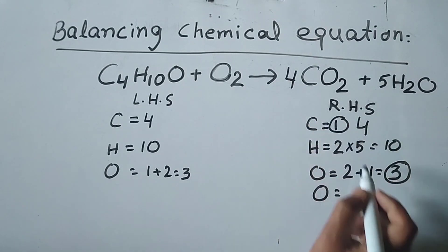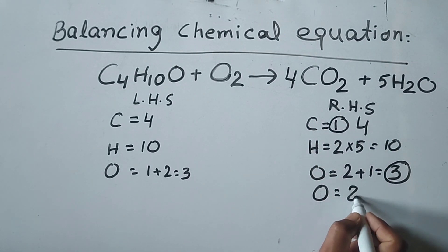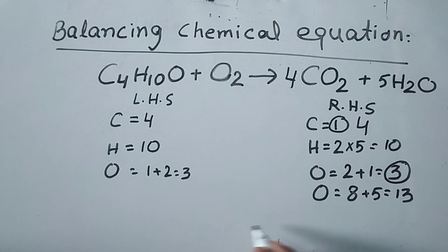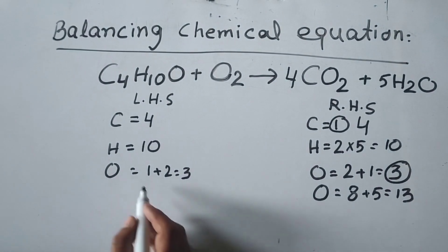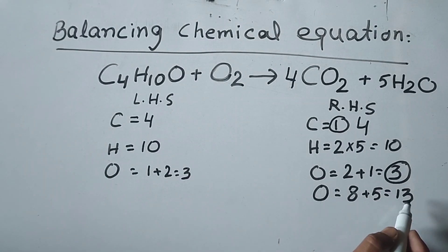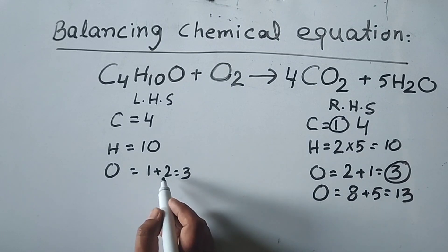There are 8 oxygen here and 5 oxygen here, totaling 13 oxygen. On this side, the oxygen count is 3. To balance the number of oxygen, we need 13 oxygen on one side and 3 on the other.